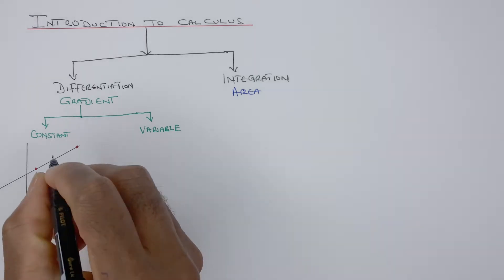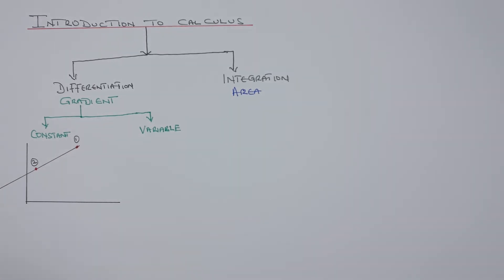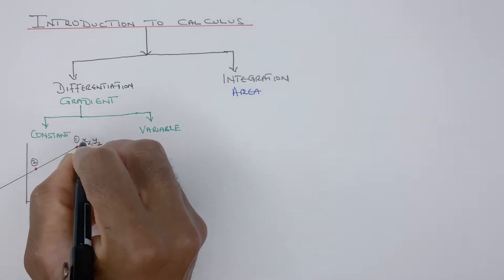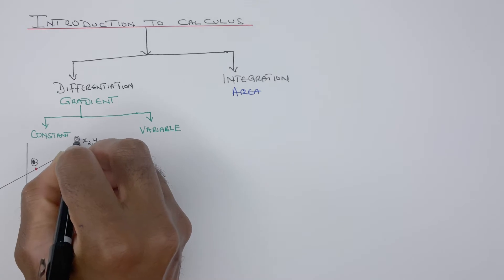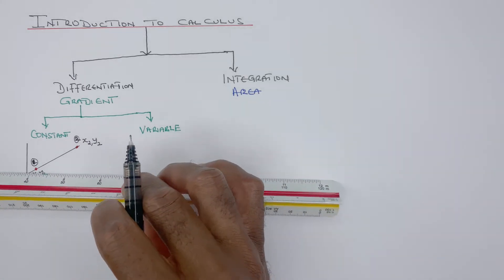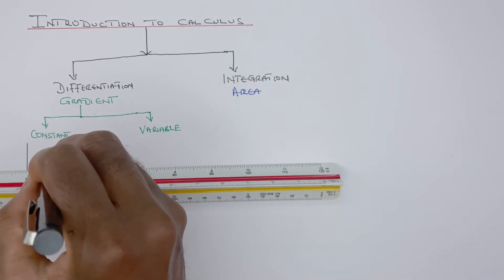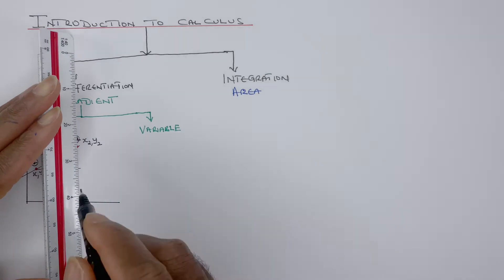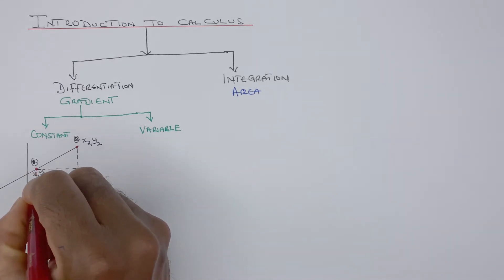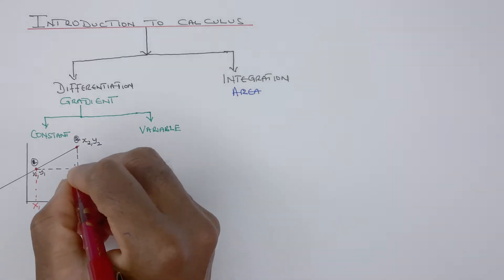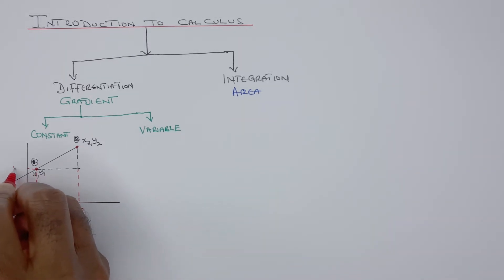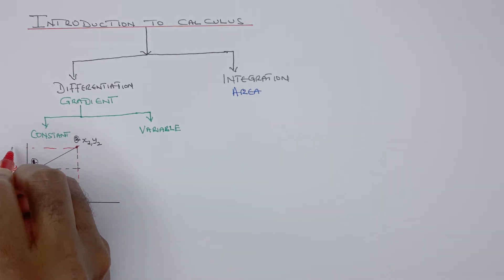You need two points to find a gradient. Any two points — point one and point two — each point has its own coordinate. Let's call this one x2, y2 for point two, and this point is x1, y1 for point one.